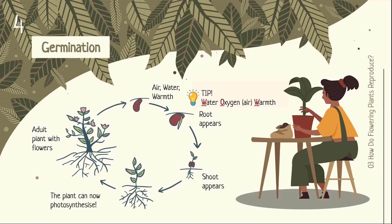Here's a tip to remember the conditions for germination — air, water, and warmth — using the acronym W-O-W: W stands for water, O stands for oxygen or air, and the second W stands for warmth.